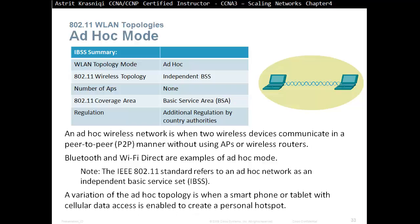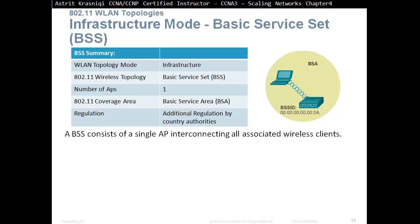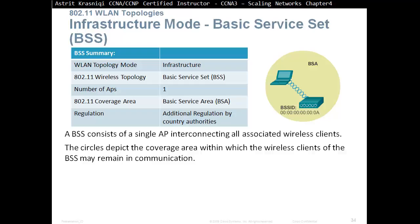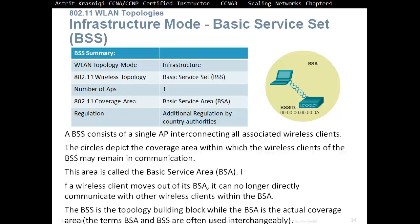Infrastructure mode is when wireless clients interconnect via a wireless router or access point, as in WLANs. A Basic Service Set, or BSS, consists of a single access point interconnecting all associated wireless clients. The coverage area is called the Basic Service Area, or BSA. If a wireless client moves out of the BSA, it can no longer directly communicate with other wireless clients within the BSA. The BSS is the topology building block, while the BSA is the actual coverage area.